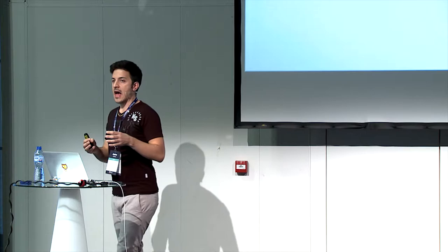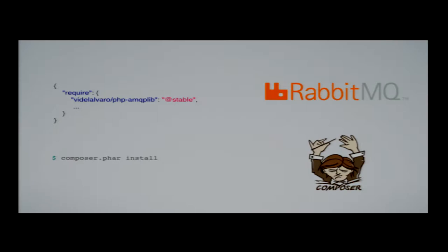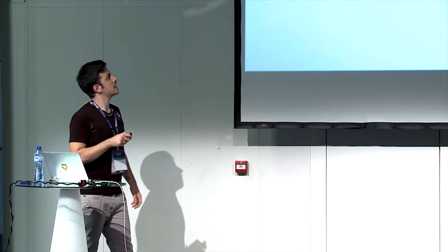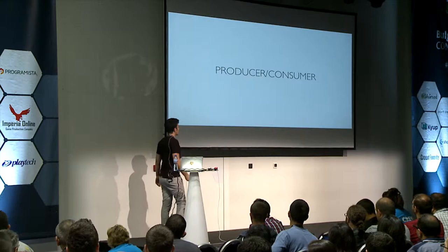We saw how brokers work. Now we want to understand how to pass messages between systems, so we need to introduce messaging patterns. To do so, we need a messaging broker. RabbitMQ is an open-source messaging broker that implements the AMQP standard. There is a library written by Vidalu Alvaro that you can install through Composer. Have you ever heard about RabbitMQ?